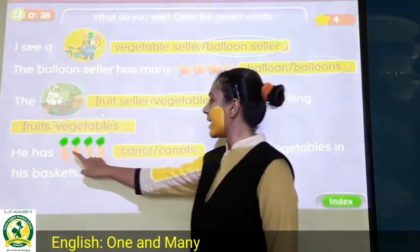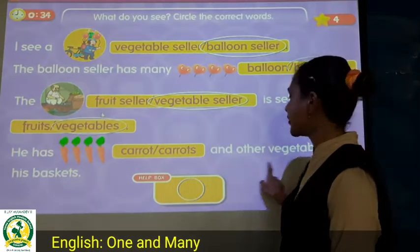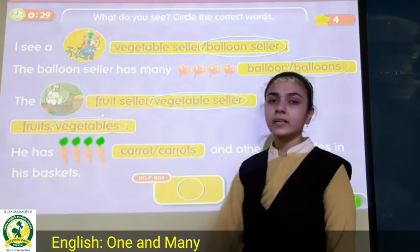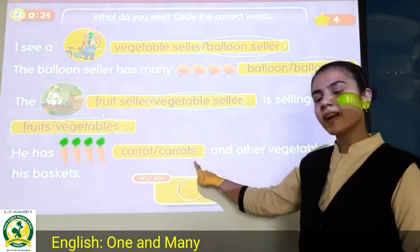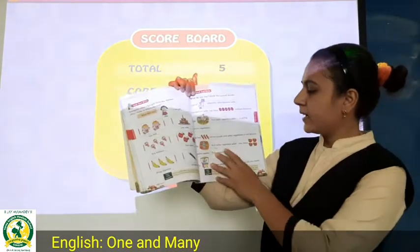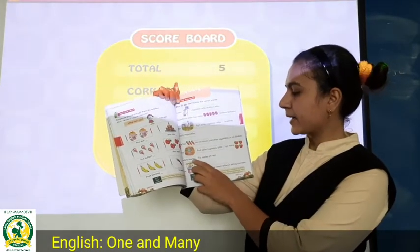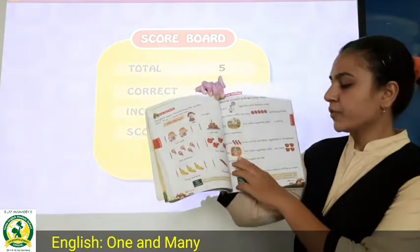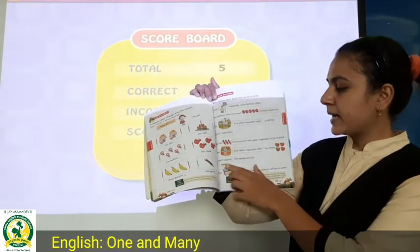He has carrots and other vegetables in his basket. Carrots are there, so we keep this and circle it. The branch has many plants. Now the next one is the fruit seller — we will circle fruit seller. The fruit seller has many fruits.